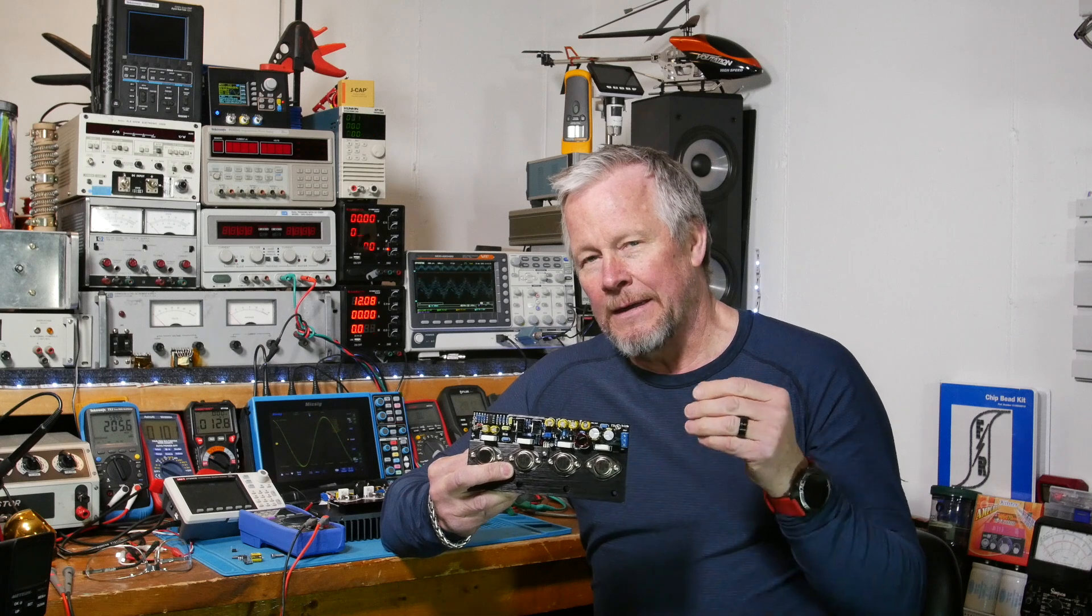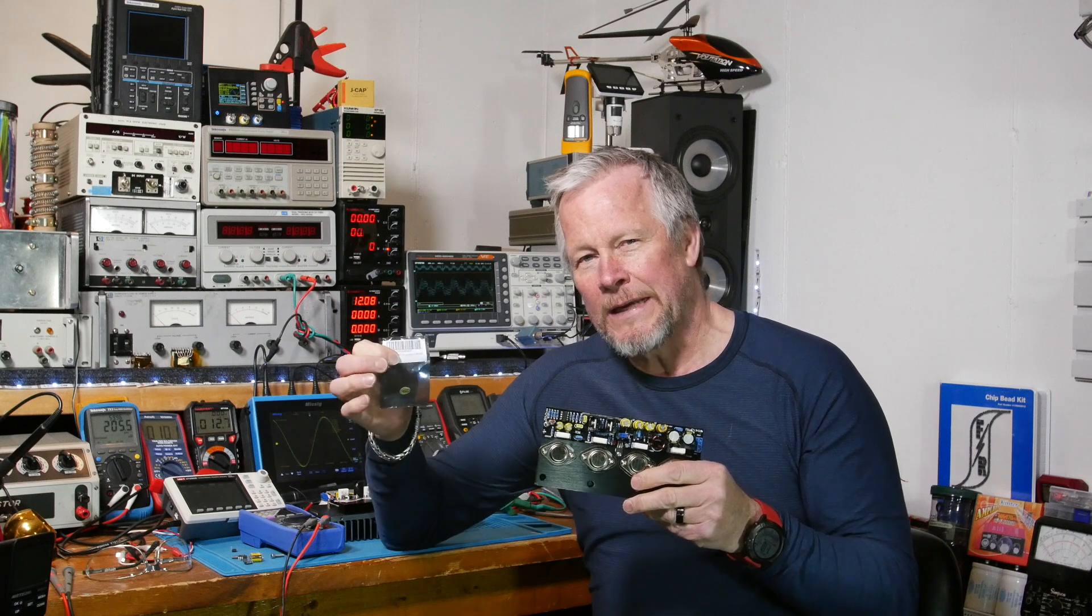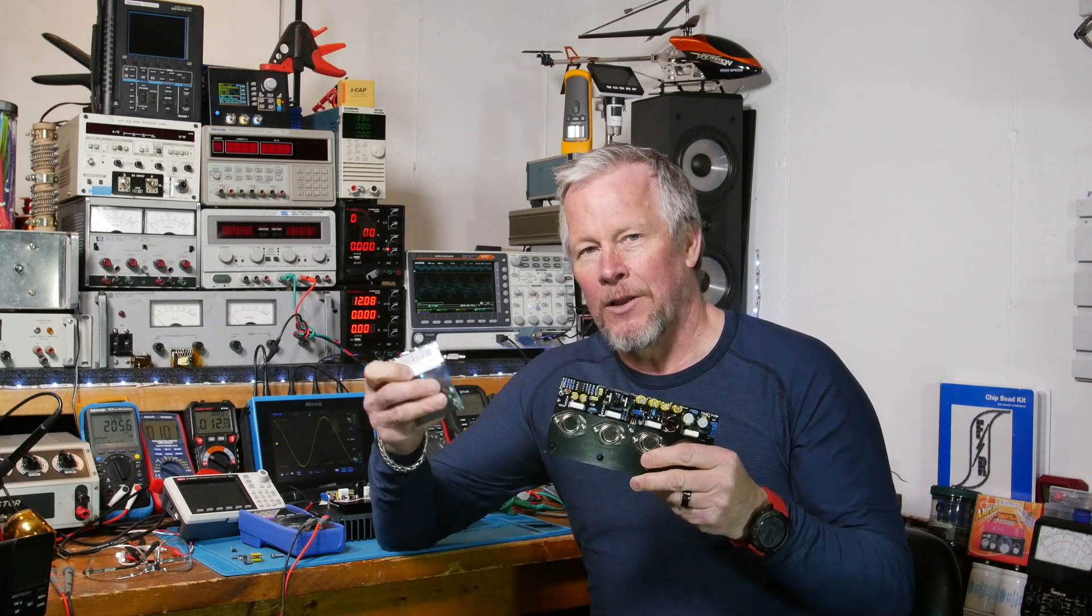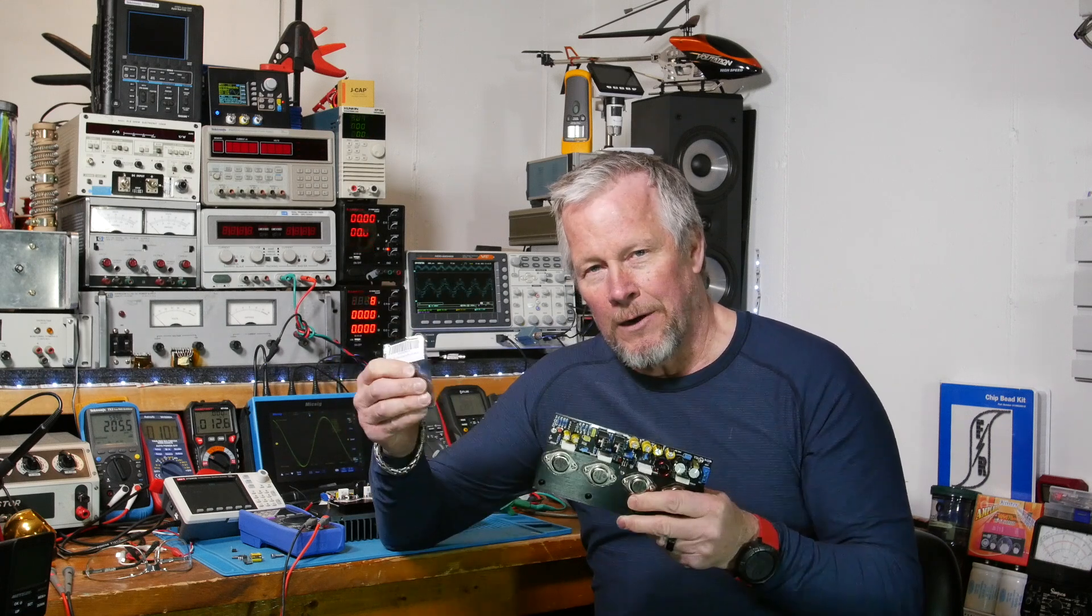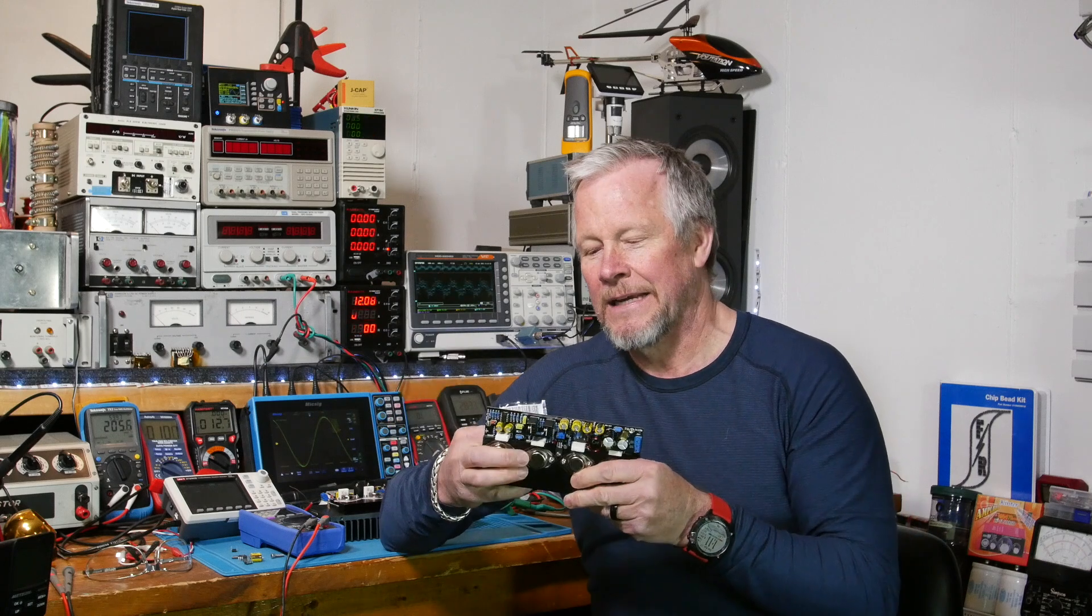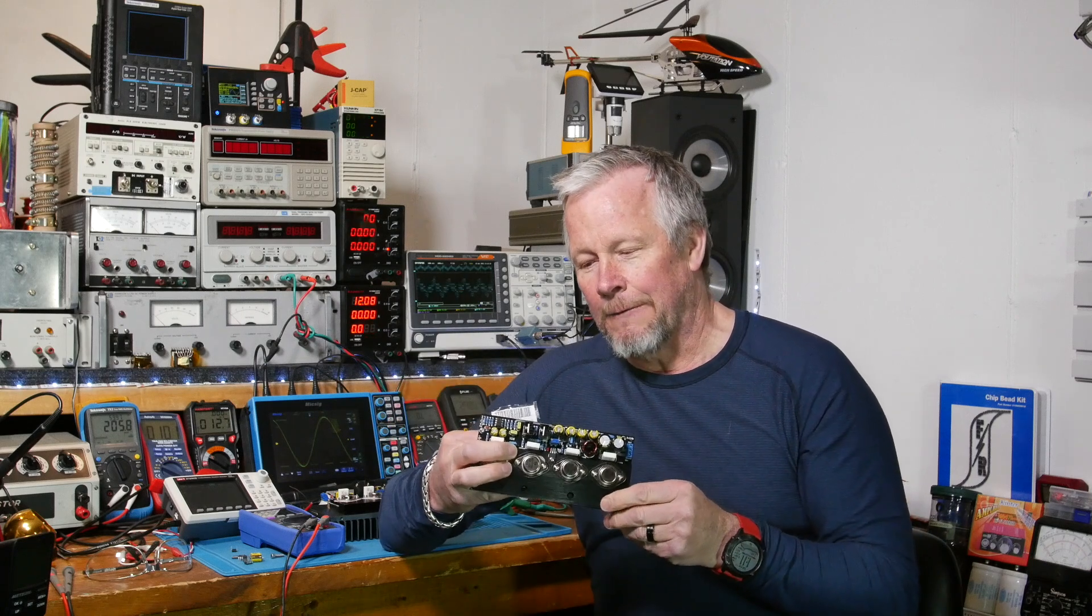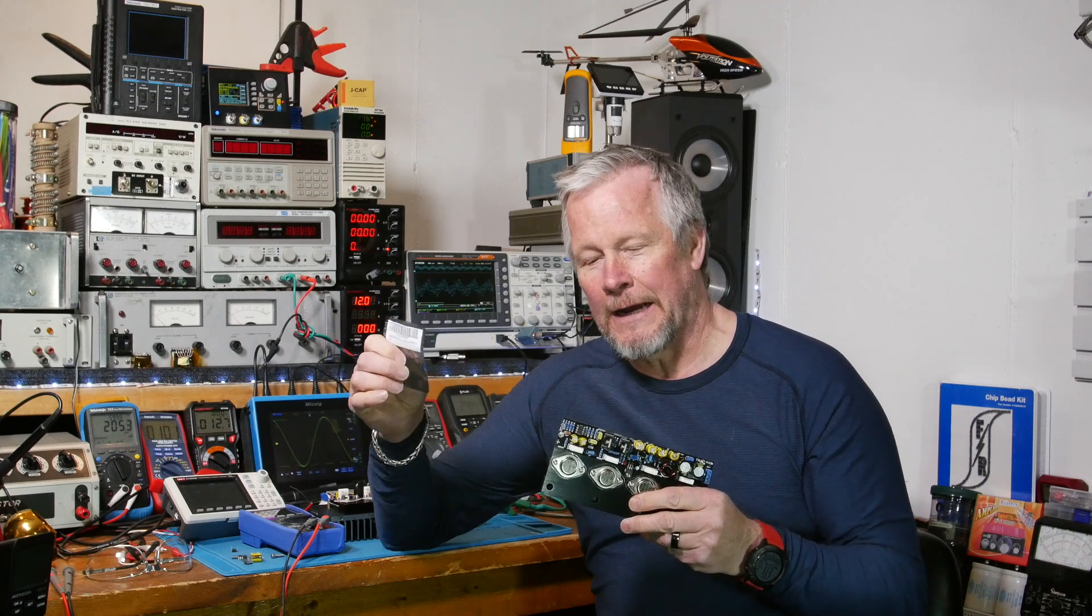So at one time I thought, well, order these Burr-Brown parts, these OPA 2604s. These things will go up to 25 volts, so you get another few volts if you run them at max. And I thought at one time I was going to do it, it took them forever to get to me, so I finally got them.